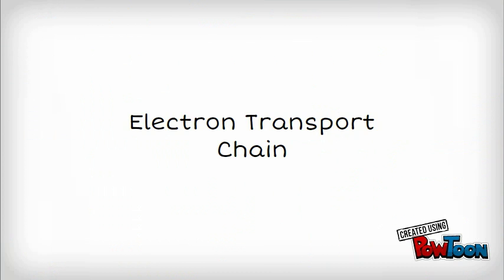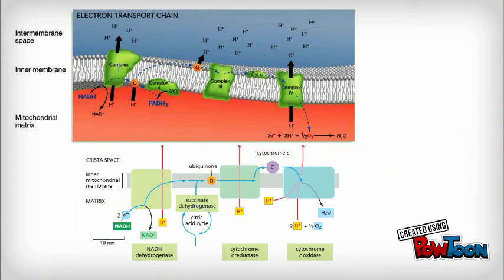Electron Transport Chain. The goal of the Electron Transport Chain is to break down NADH and FADH2, pumping hydrogen into the outer compartment of the mitochondria.